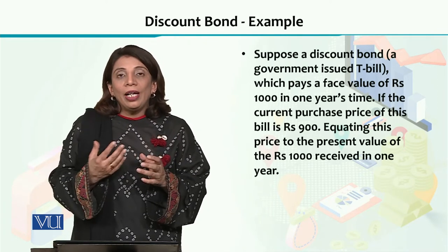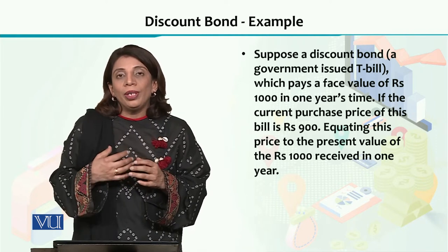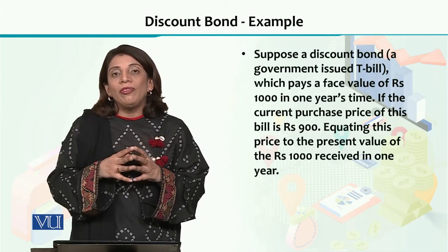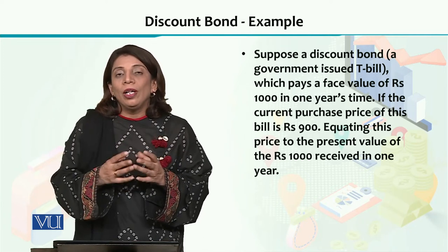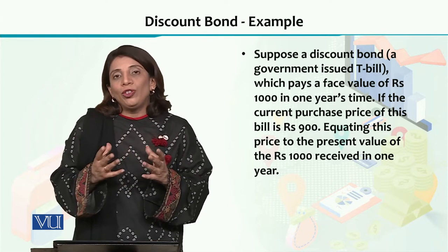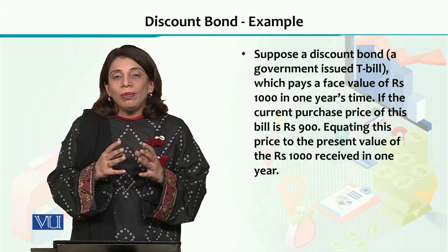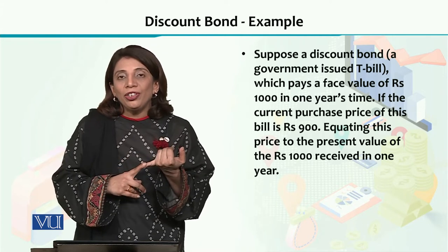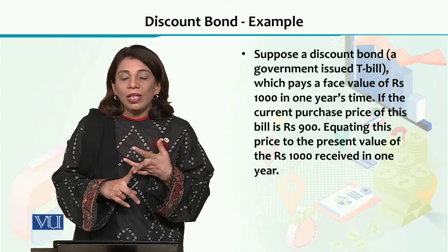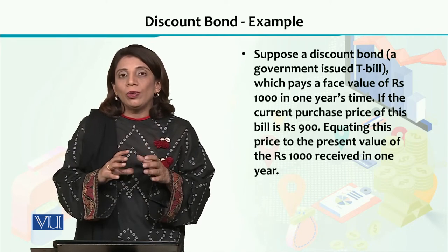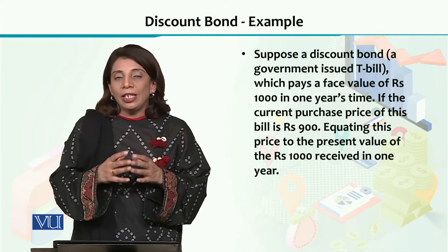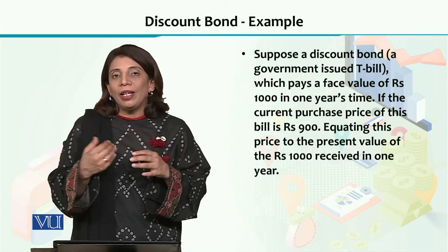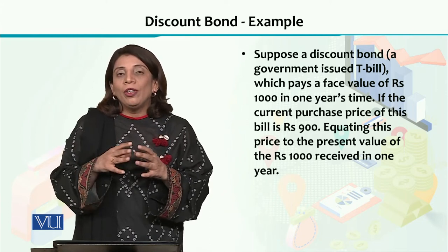Discount bond की example के लिए, I would like to quote the example of government T-bills. T-bills सरकार, state bank, या central bank issue करते हैं। T-bills treasury bill का short form है — यह वो instrument है जो हकूमत को short term loan चाहिए होती है तो वो issue करते हैं। T-bills 30 days, 45 days, 60 days, या 90 days के duration के हो सकते हैं, depending upon किस purpose के लिए पैसे चाहिए हैं।